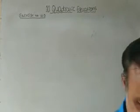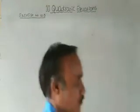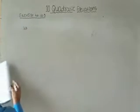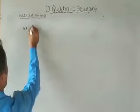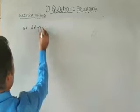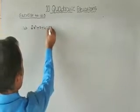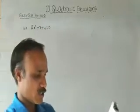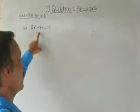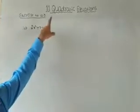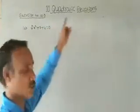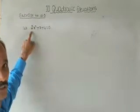Let us consider the next question. Question number 4: 2x² + x + 4 = 0. Again, the middle term is positive, so we will get the form (a + b)² = a² + 2ab + b². The coefficient of x² is 2, which is not a perfect square.